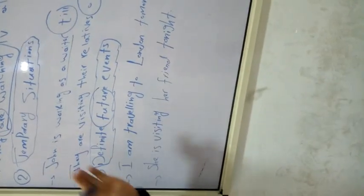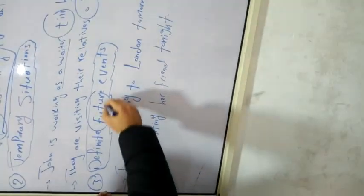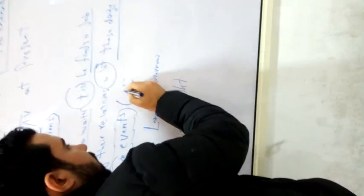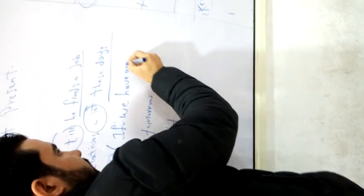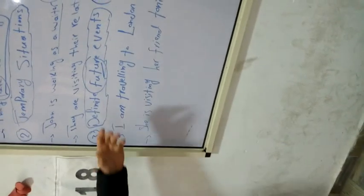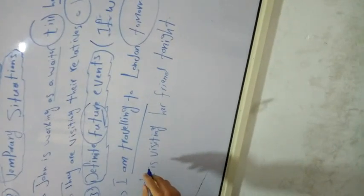The last one: definite future events. What about the future? How can we express the present continuous with the future? It is just present continuous for the future if we have arranged it, if we have a plan. If we have arranged the action, if we have planned it with the present continuous.